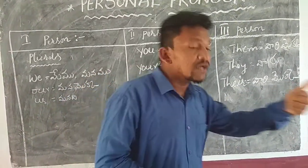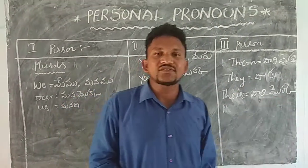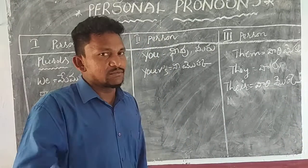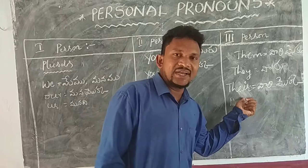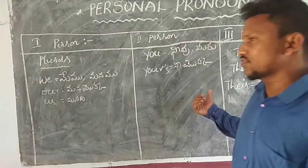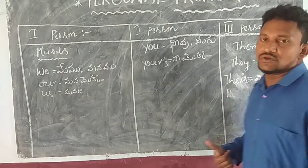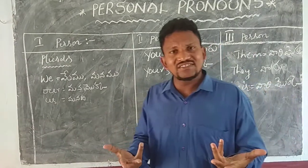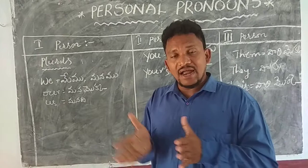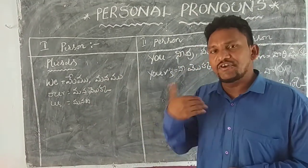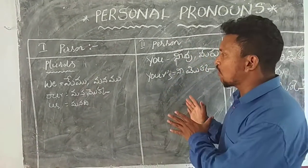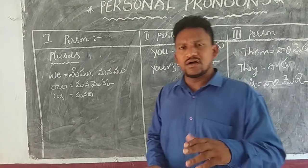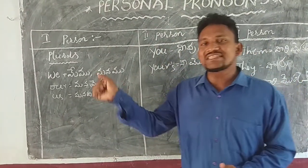Now 'their' — when something completely belongs to them, we use 'their.' For example: 'It is their belief. It is their class. They are playing on it.' So 'they' is different, 'their' is different — 'they are there, they are right' — these words are used in the plural. If you don't understand, don't get scared. I will give some examples in the next class. Until then, observe and take notes.